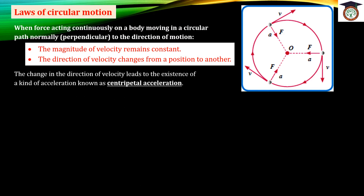The change in direction of velocity leads to the existence of a kind of acceleration known as centripetal acceleration. When the object moves in a circular path, the speed remains constant, but the direction of velocity changes. Because velocity is a vector physical quantity, the change in its direction gives us centripetal acceleration.